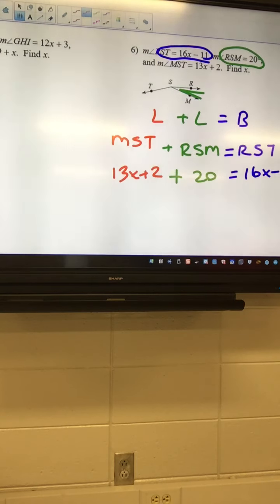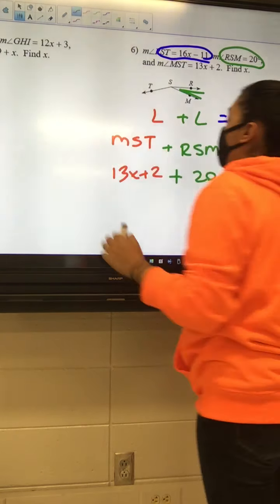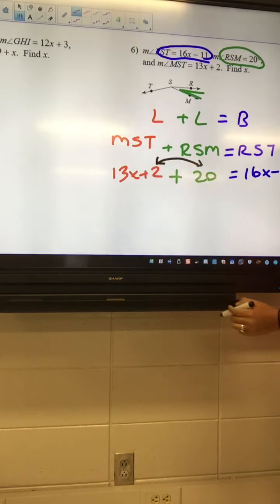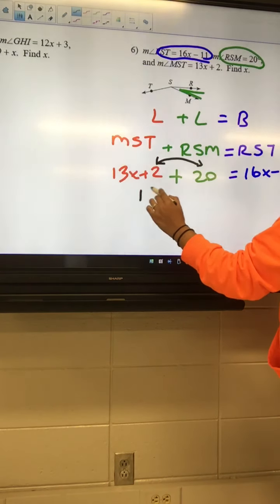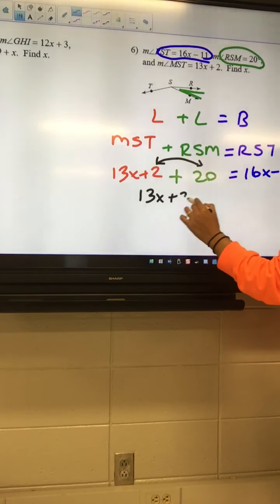Okay, so we got to combine our like terms, and this one I'm going to pick it up a little bit. So we're going to combine our like terms, and I got 2 plus a 20. So I got 13X plus 22.